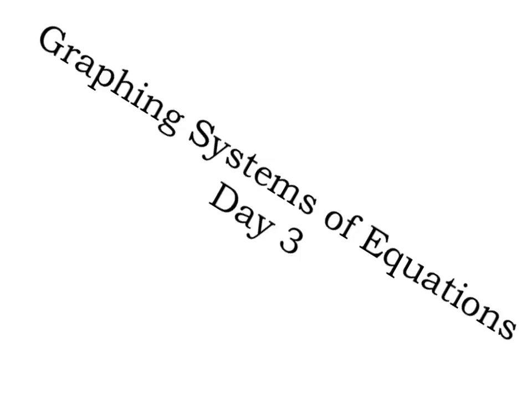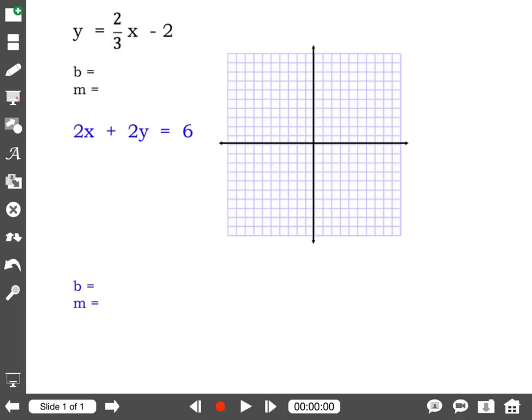And we're back. All right, ladies and gentlemen, today we're going to be talking about graphing systems of equations. It's our third day, and we are so ready. Here is our first example. Our two equations in our system are y equals 2 thirds x minus 2, and 2x plus 2y equals 6.